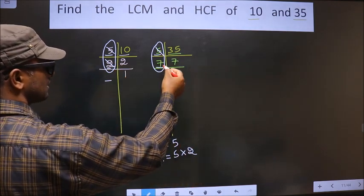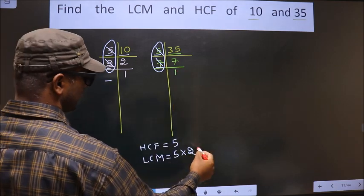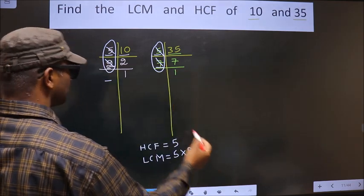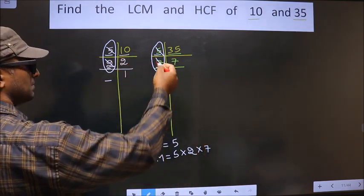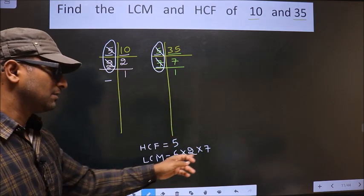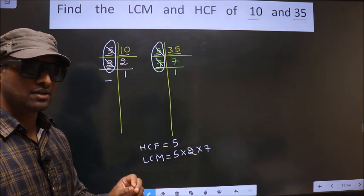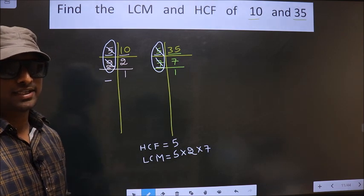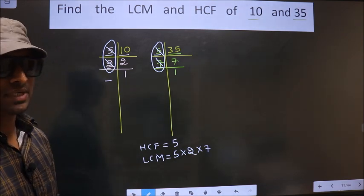Now here 7 is not cut, so you cut 7 right here. Now each number has been cut. Therefore, you multiply these numbers. Whatever number you get, that is your LCM. So let us multiply.